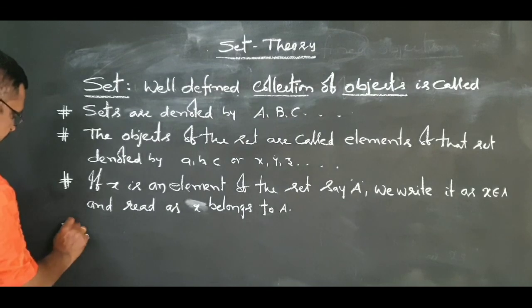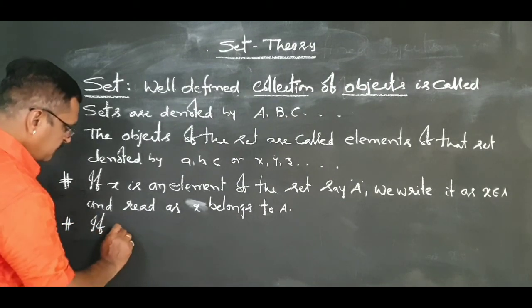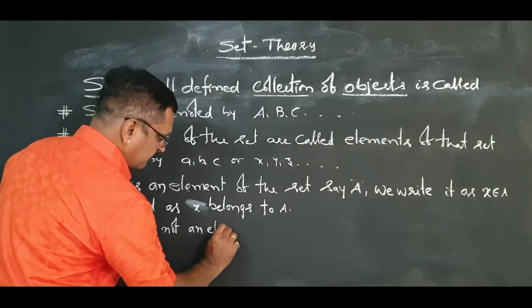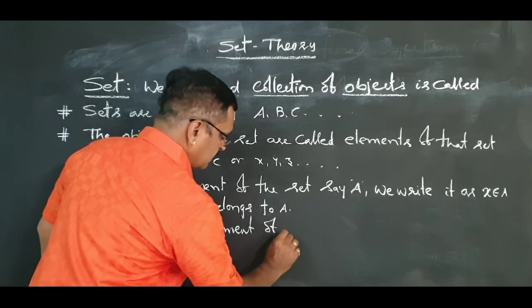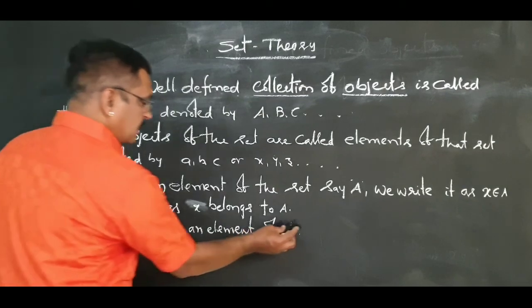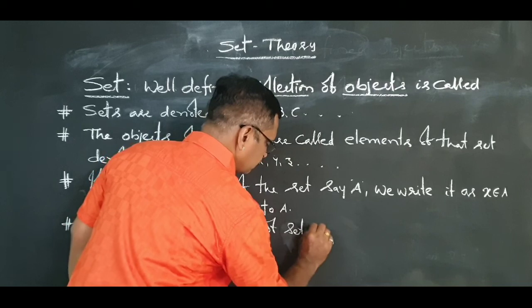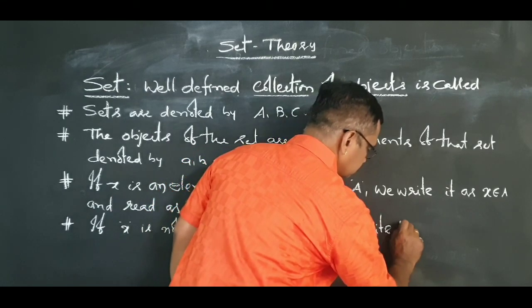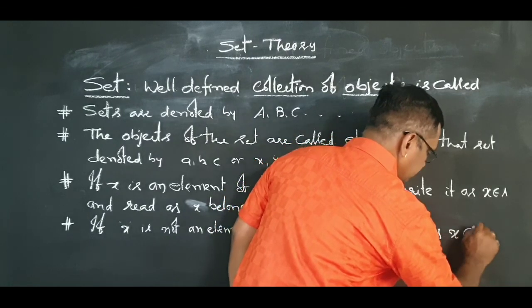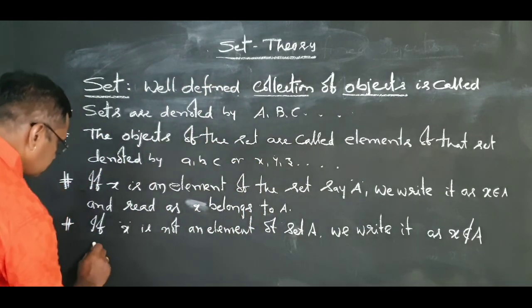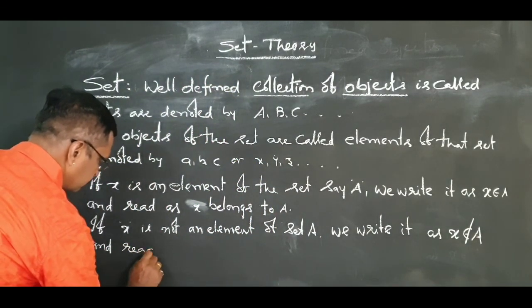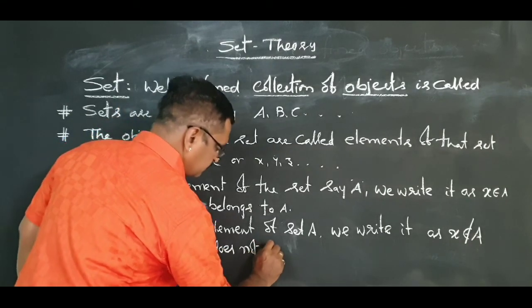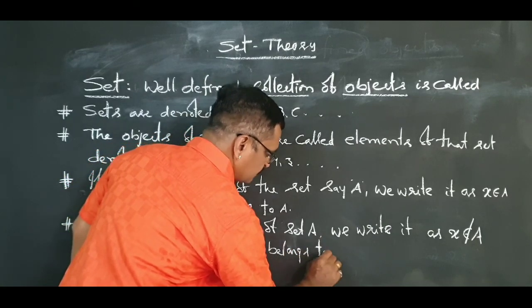At the same time, if x is not an element of A, we write it as x ∉ A. We read this as x does not belong to A.